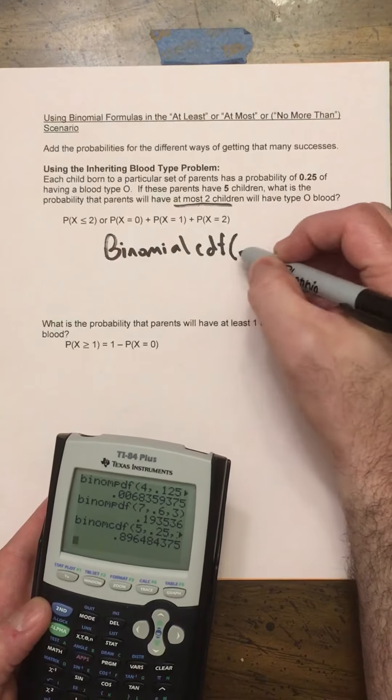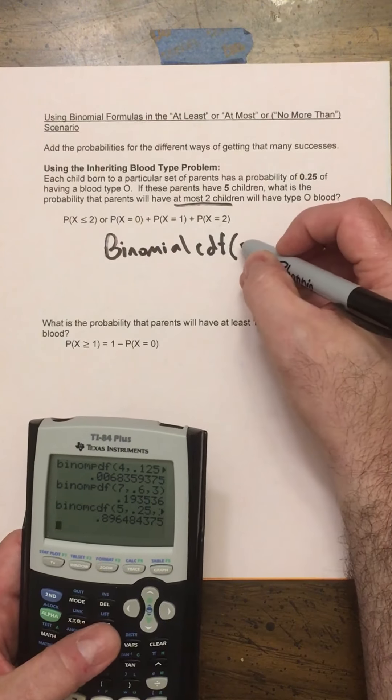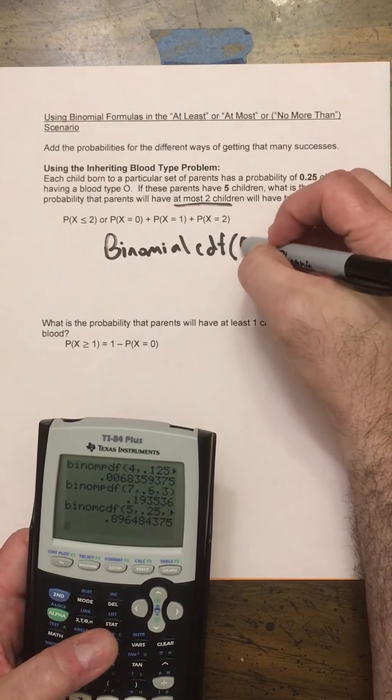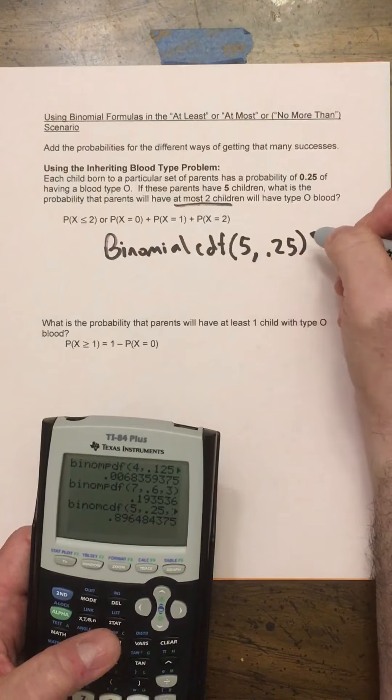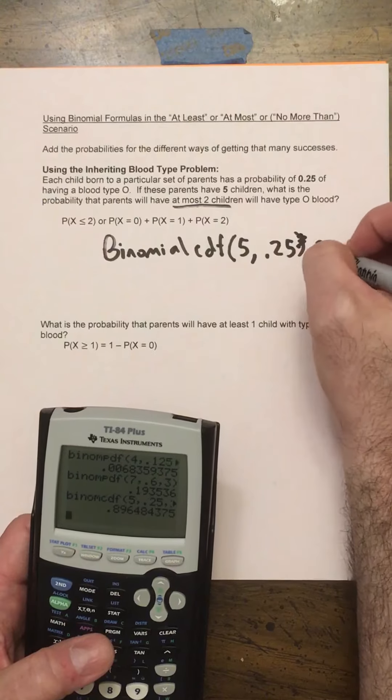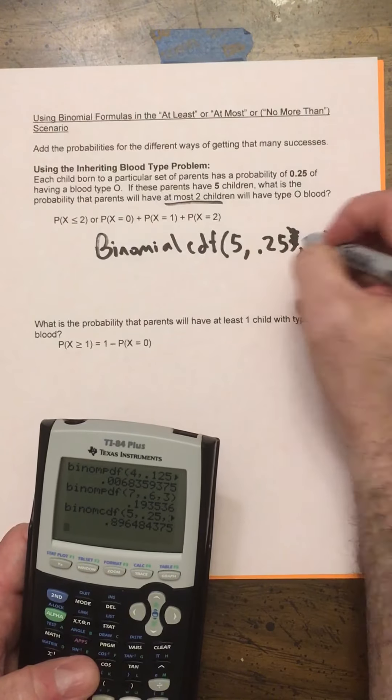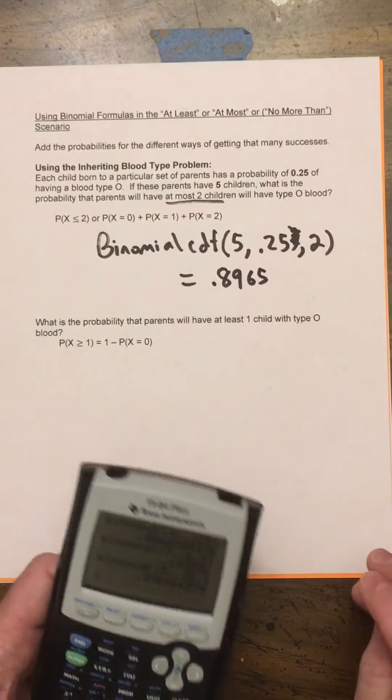And that's going to give us 0.8965. So I'll put in what we're supposed to put in here. You're supposed to put in the number of trials, which is 5 trials, probability of success, 0.25, and then we also needed comma 2. So that is going to give us 0.8965.